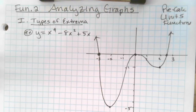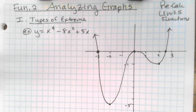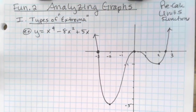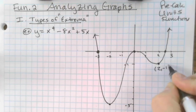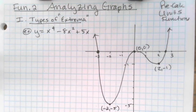Good afternoon. We are in the second day of notes for chapter 5, functions, and we're going to go through a series of steps where you analyze graphs using different criteria. The first one is types of extrema. You might want to pause the video and take a second to draw this graph and label the points that I'm labeling here, because they're going to be used in our analysis.